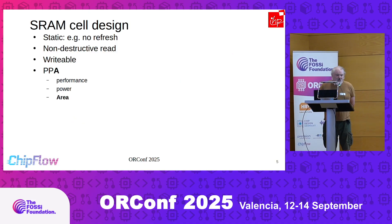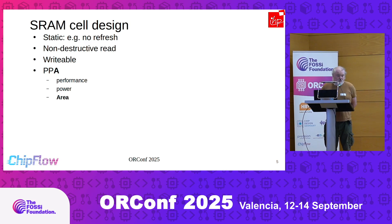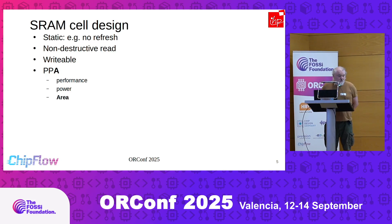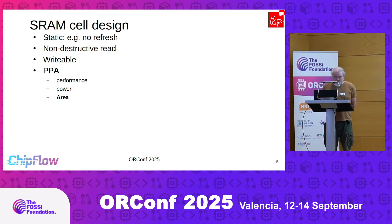What are the requirements for the SRAM cell? You want it to be static — the difference between static RAM and DRAM is that you don't want a refresh. You also want to read the contents without destroying them. In DRAM, when you read, you have to refresh it. You also want to be able to write data. These two things — non-destructive read and write — require a trade-off. And then there's power, performance, and area.